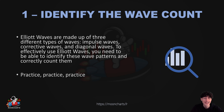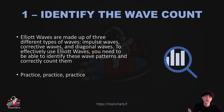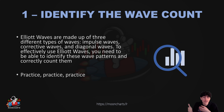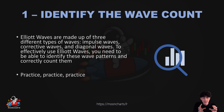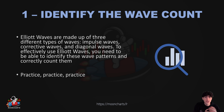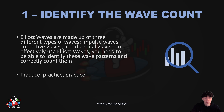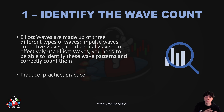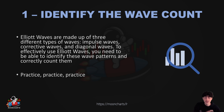So first of all, you have to identify the wave count. This is very, very important to identify a good wave count. Elliott Waves are made up of three different types of waves: impulsive waves, corrective waves, and diagonal waves — so leadings and endings. To effectively use a wave, you need to be able to identify these wave patterns and correctly count them.